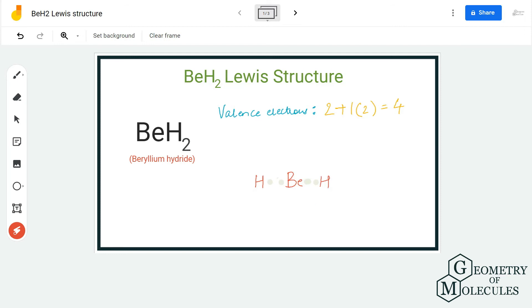But when it comes to beryllium, it has four valence electrons in its outer shell, which is fine because it is an exception to the octet rule. So it can have four valence electrons in its outer shell.